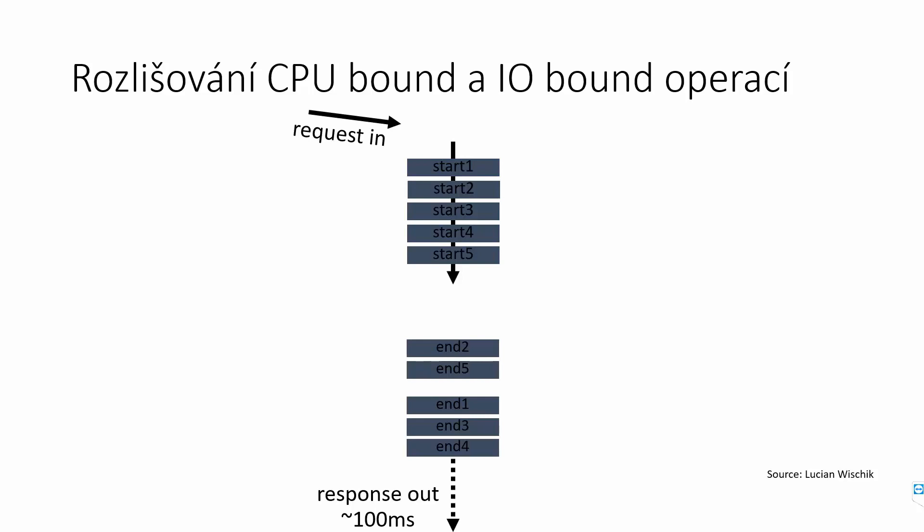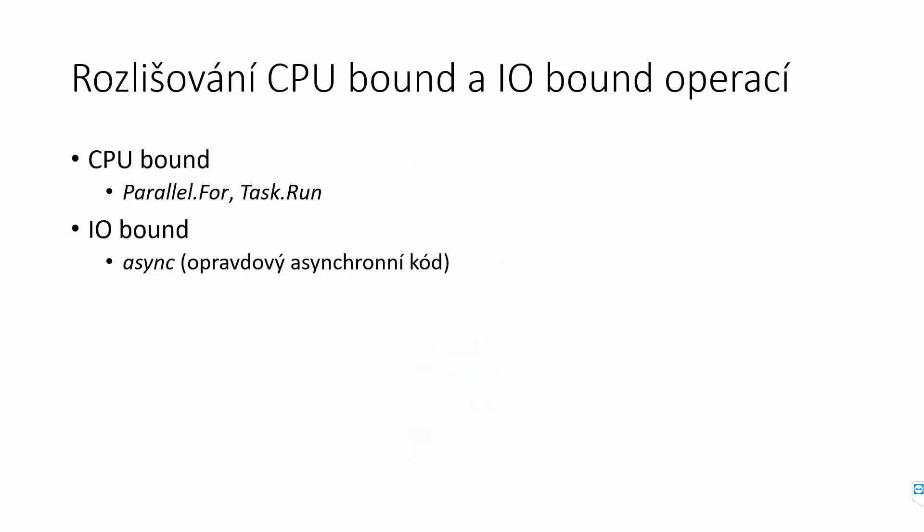You're bound by network latency and throughput — you can do 5, 10, maybe 50, but then your network becomes the bottleneck, which makes sense. So if you're doing something CPU-bound, use Parallel.For or Task.Run. If you have something IO-bound, you need to use real async code. With truly correct asynchronous code, there is no thread — you don't need to worry about creating threads or thread pool starvation.